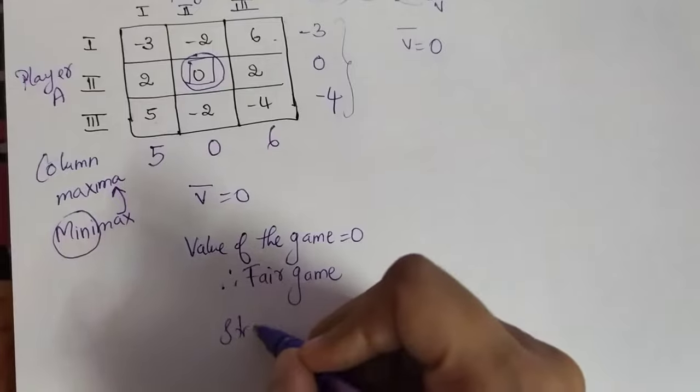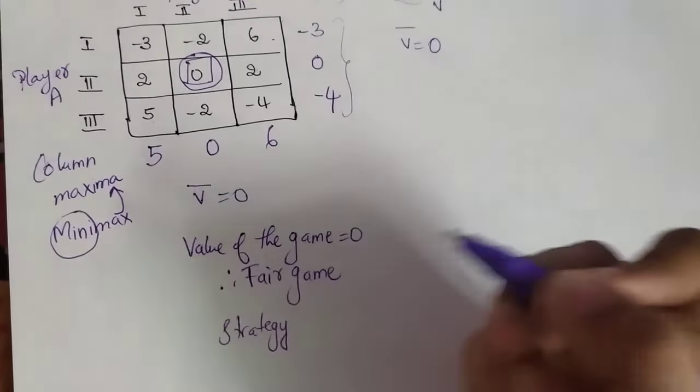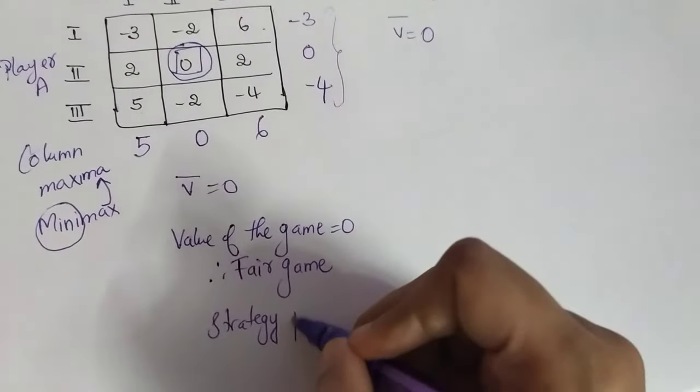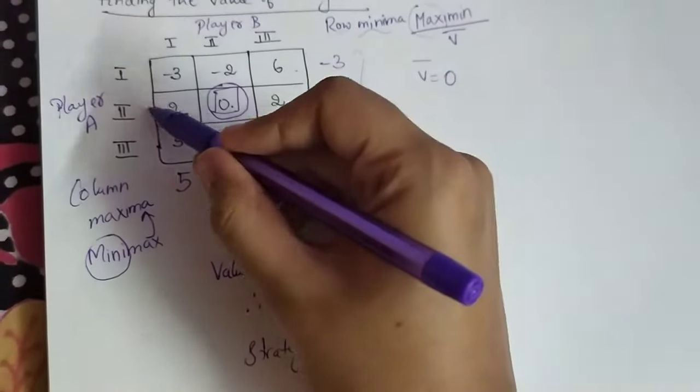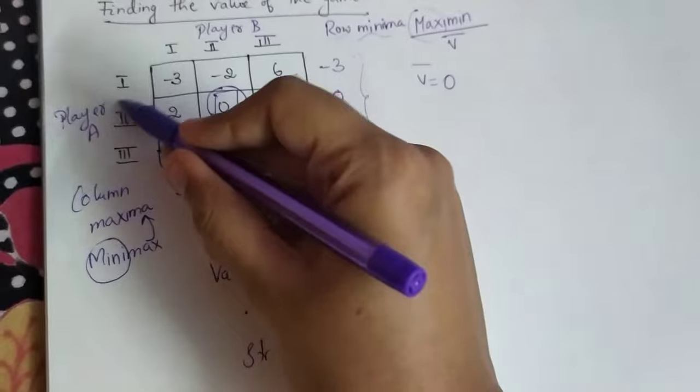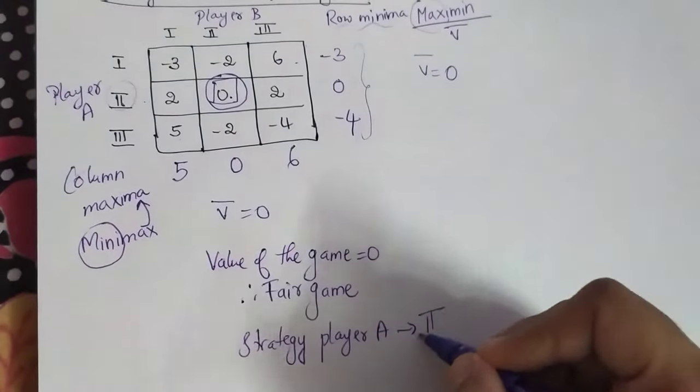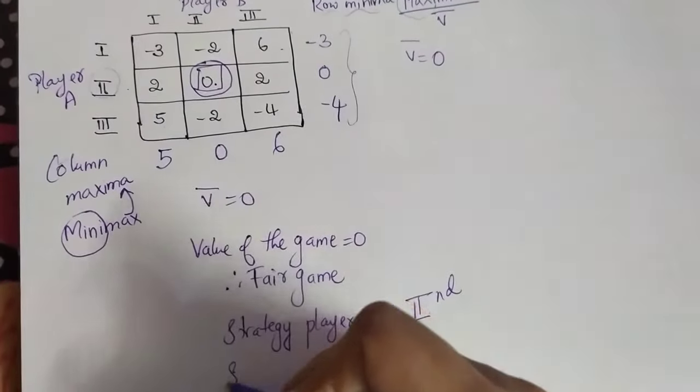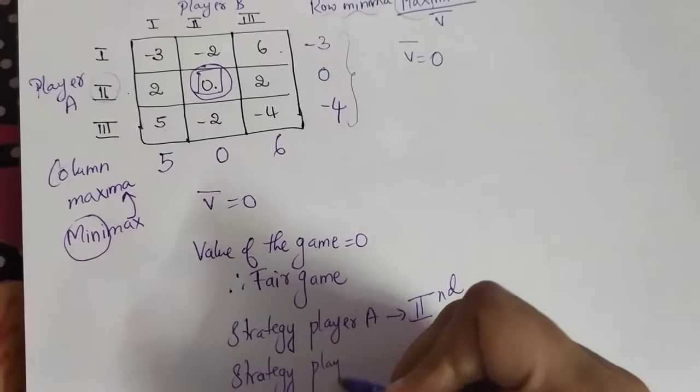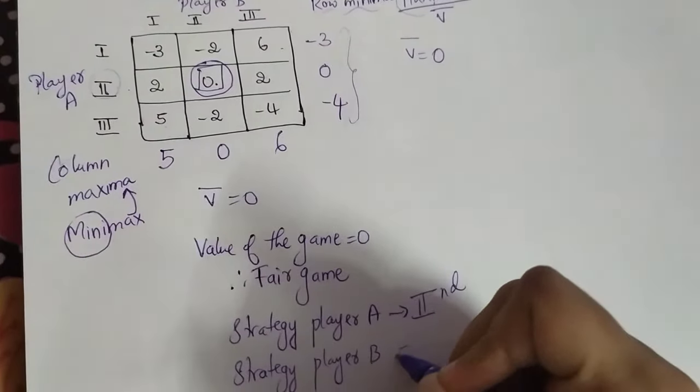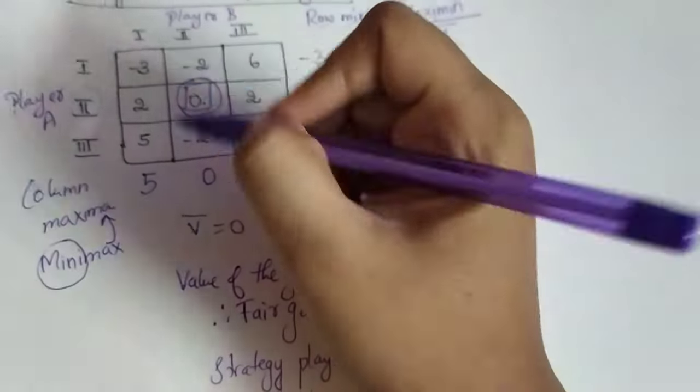And the strategy or the plan or the rules what is applied by Player A? It is the second strategy what Player A has applied, this second strategy. And the strategy of Player B is also the second strategy.